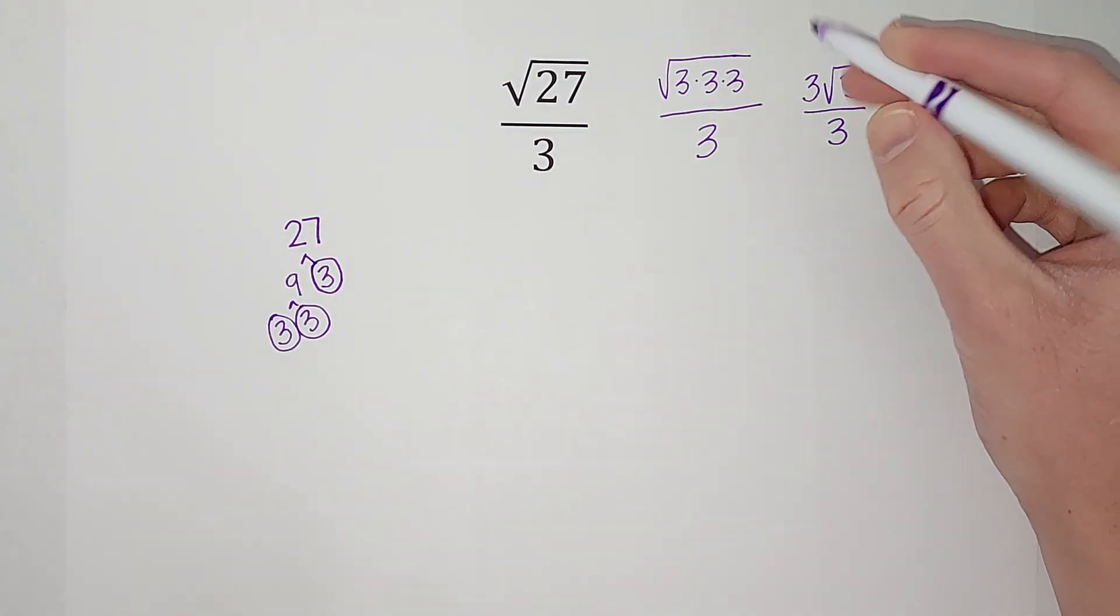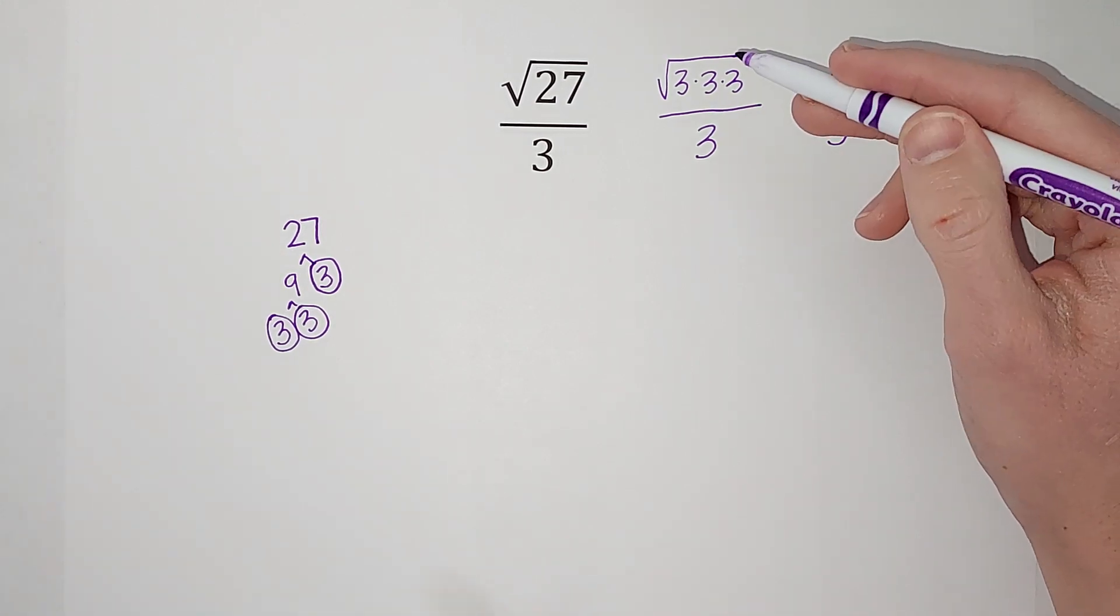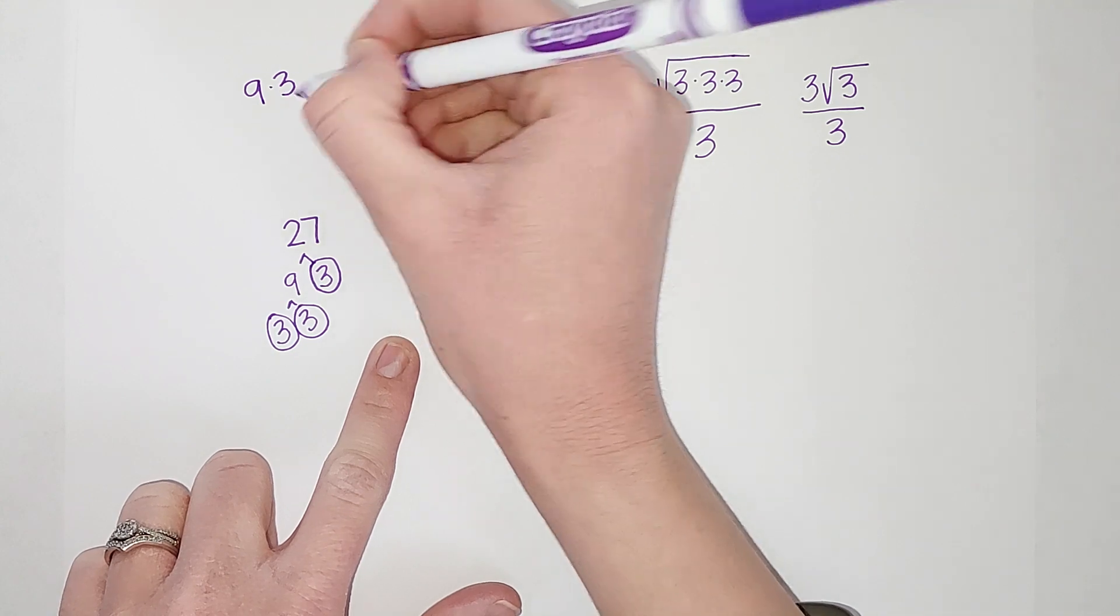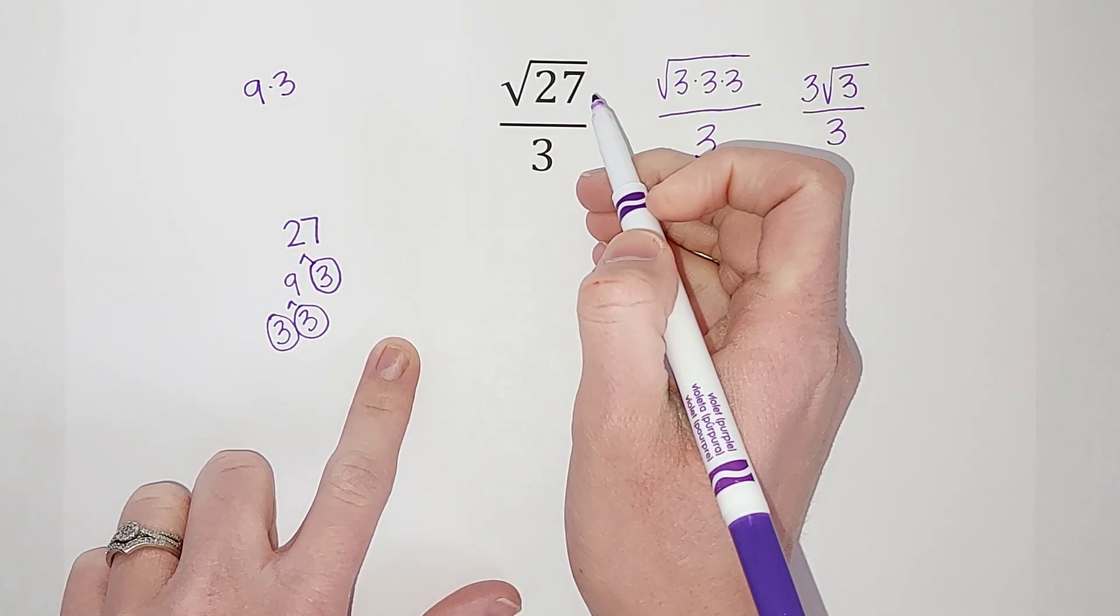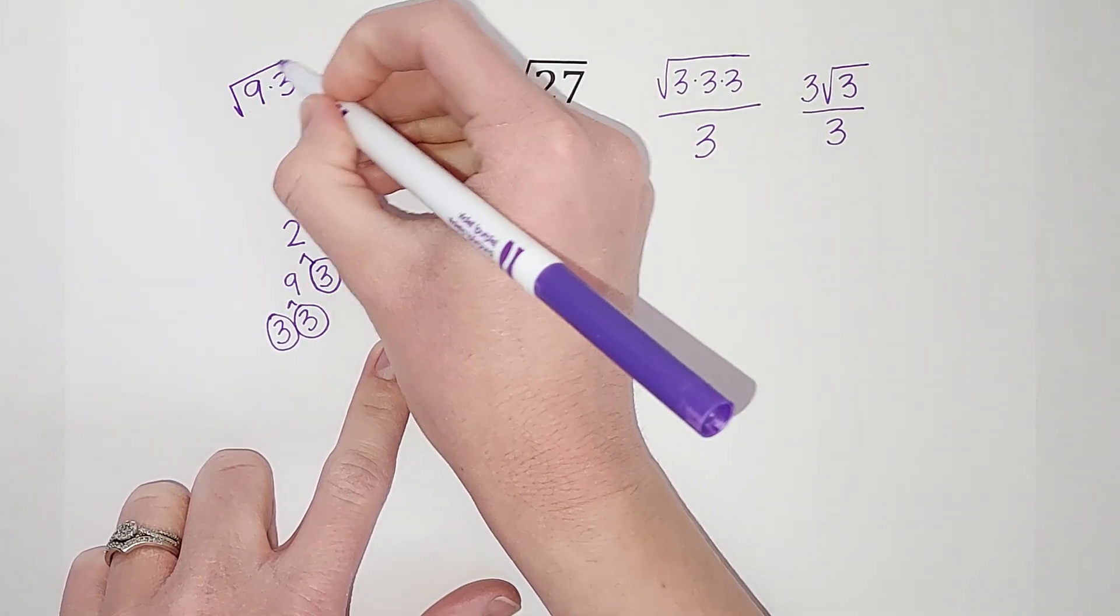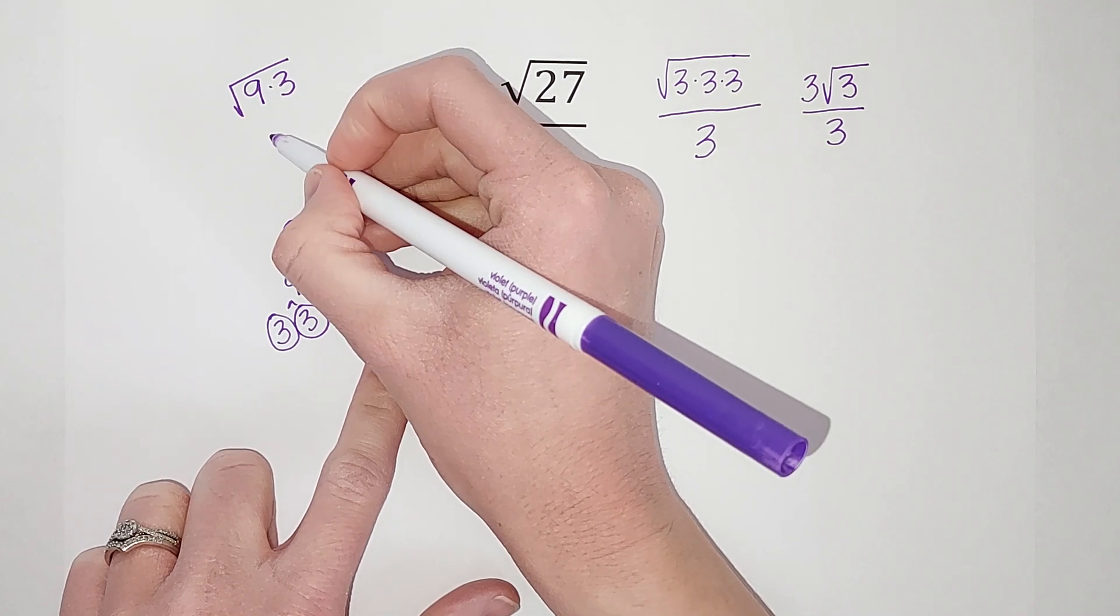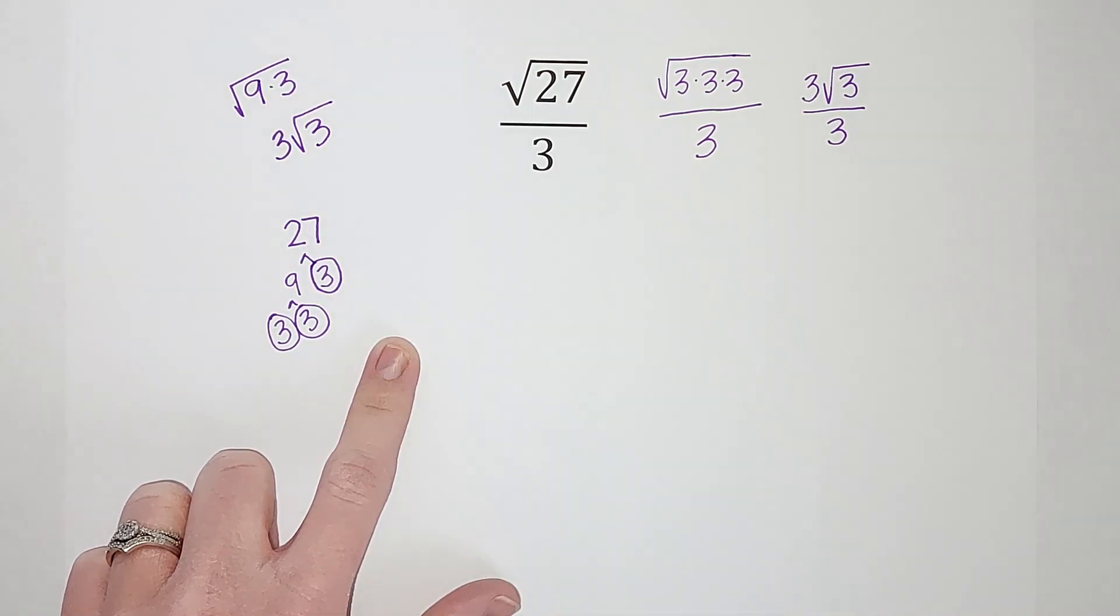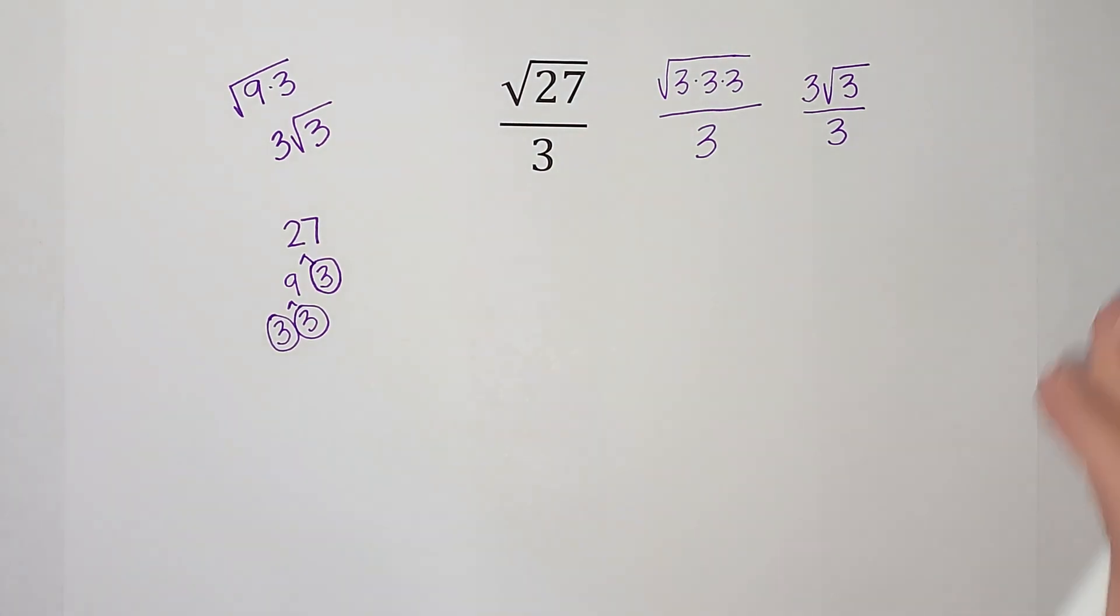So 3 times 3 times 3 gives me 27. Also, 9 times 3 gives me 27. I could have written 27 as 9 times 3 under the square root, and what's the square root of 9? It's 3. So that comes on the outside, one of the 3 stays inside. Hopefully one of those two ways made sense.